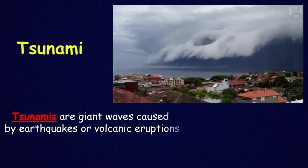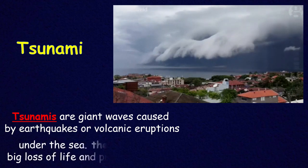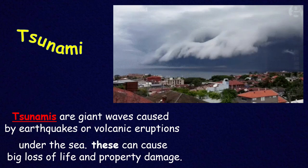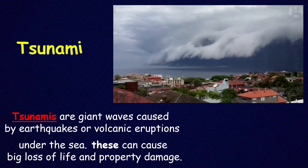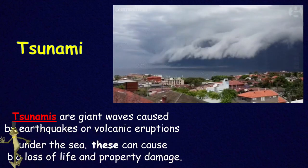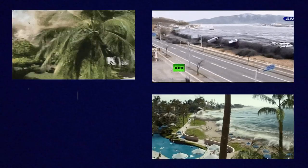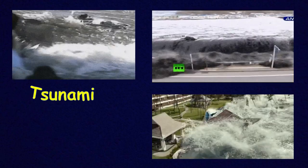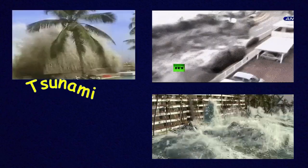Tsunamis are giant waves caused by an earthquake or volcanic eruption under the sea. They can cause a big loss of life and property damage. If you see one, just run — you cannot hide, just keep running.